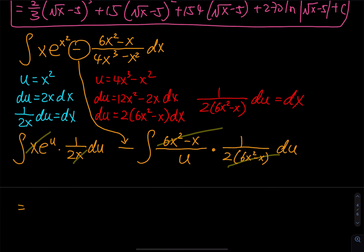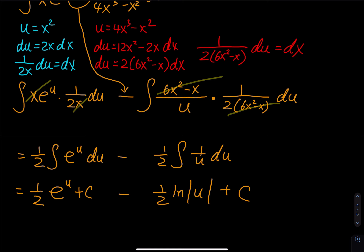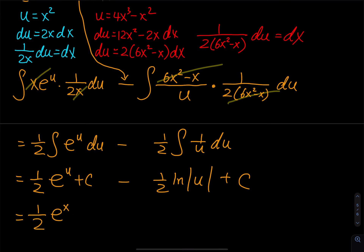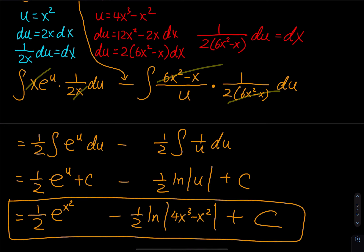So you are integrating one-half integral of e to the u du, minus one-half integral of 1 over u du. This gives one-half e to the u minus one-half ln of absolute value of u, plus C. Back-substituting: one-half e to the x squared minus one-half ln of absolute value of 4x cubed minus x squared, plus C. Since 4x cubed minus x squared can be positive or negative, we keep the absolute value, and just add one big C at the end.